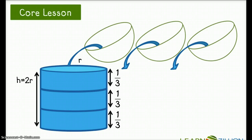So now we know that three hemispheres equals the volume of the cylinder with the same height and radius. Let's take a look at how this can help us find the volume of a sphere.